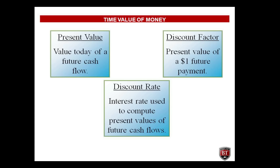To summarize: Present Value is the value today of a future cash flow. Discount Factor is the present value of $1 of a future payment. Discount Rate is the interest rate used to compute present values of future cash flows.